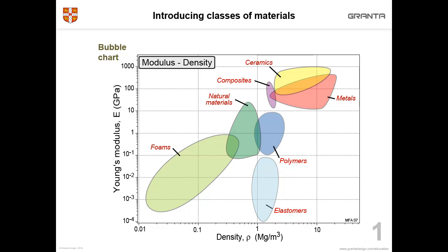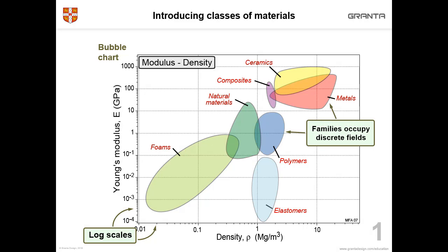You can see this bubble chart has a log scale on both axes to make sure that we can fit all the data onto one clear slide. You can talk to students about why metals have a high Young's modulus or a high density and why polymers are somewhere in the middle. You can talk to them about bonding and packing density and so on.